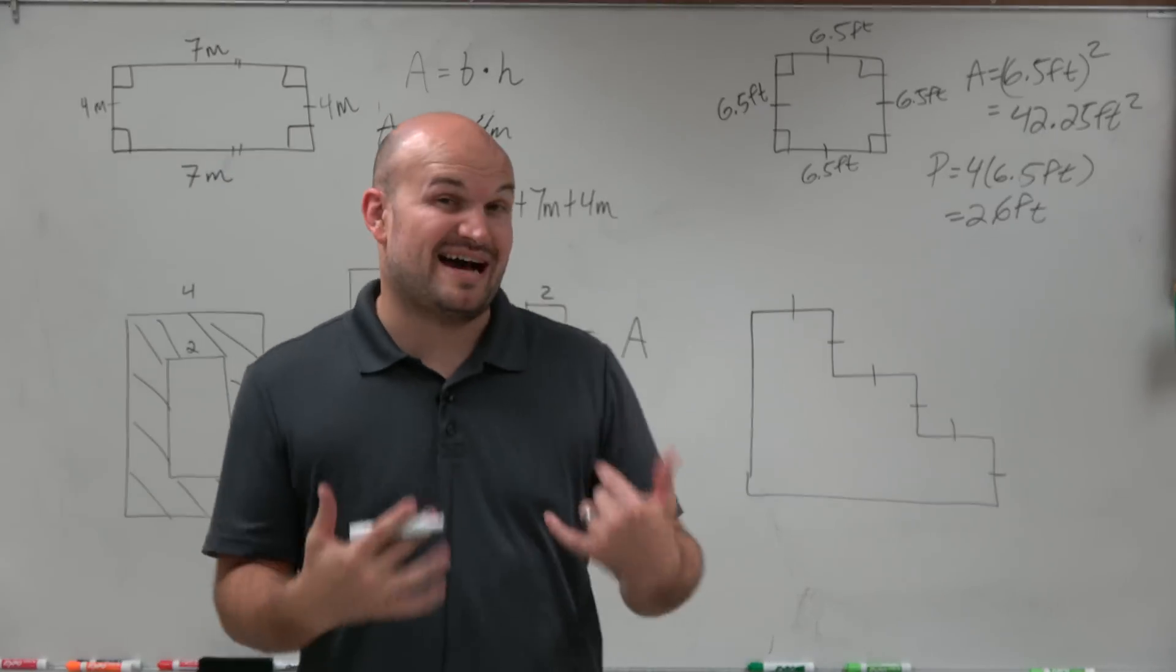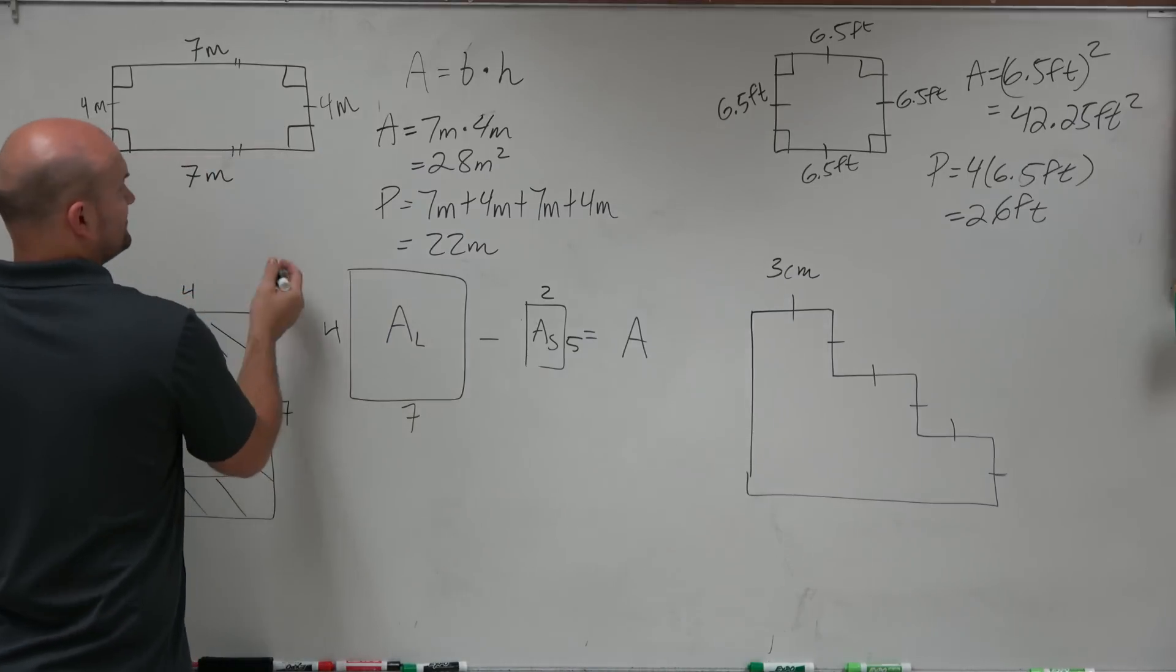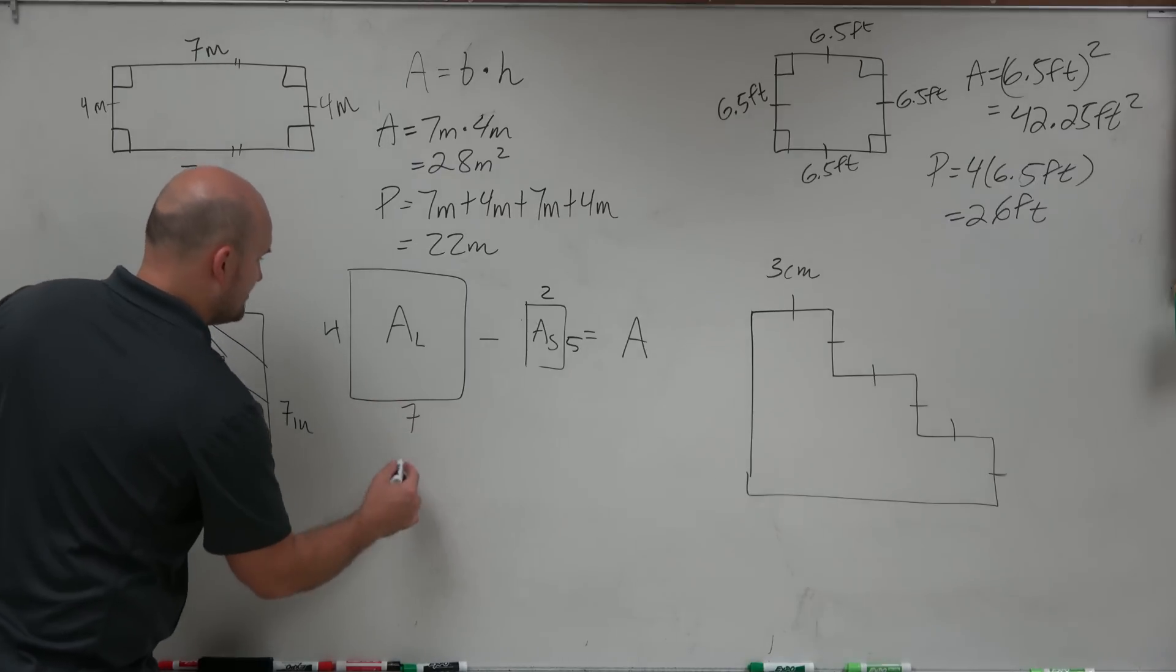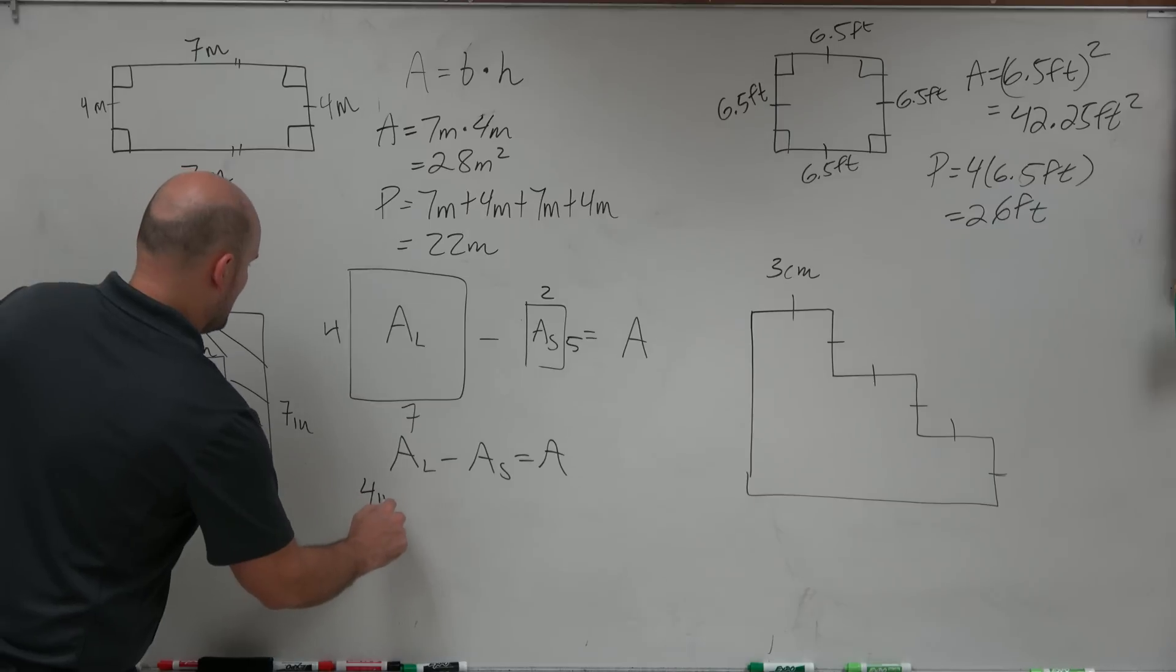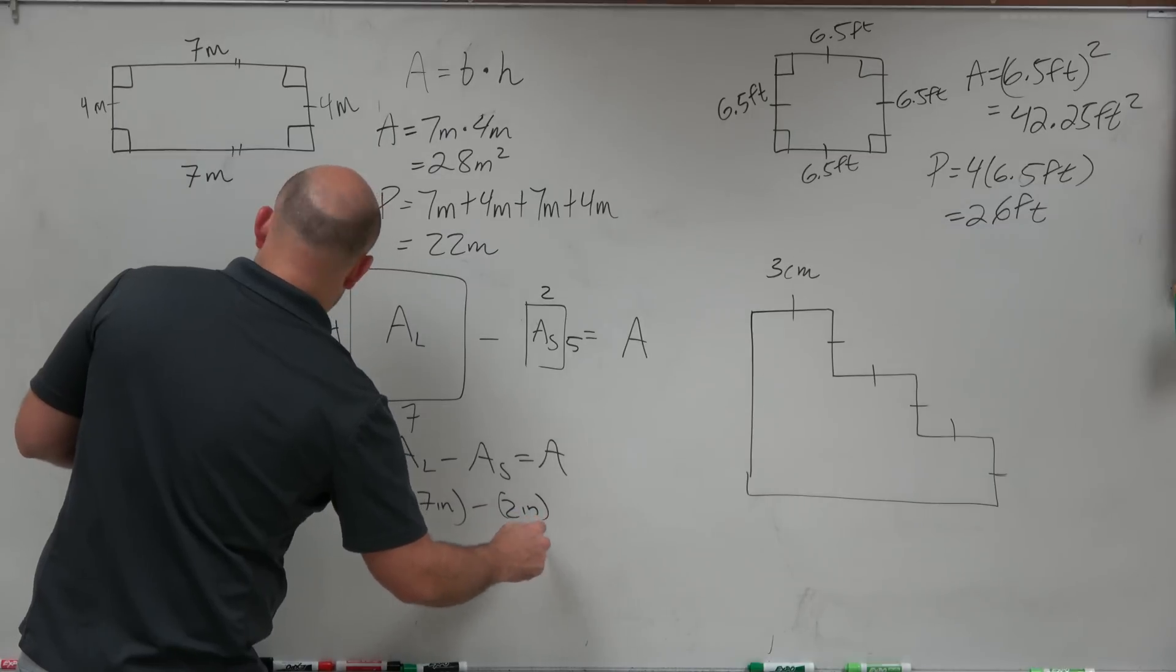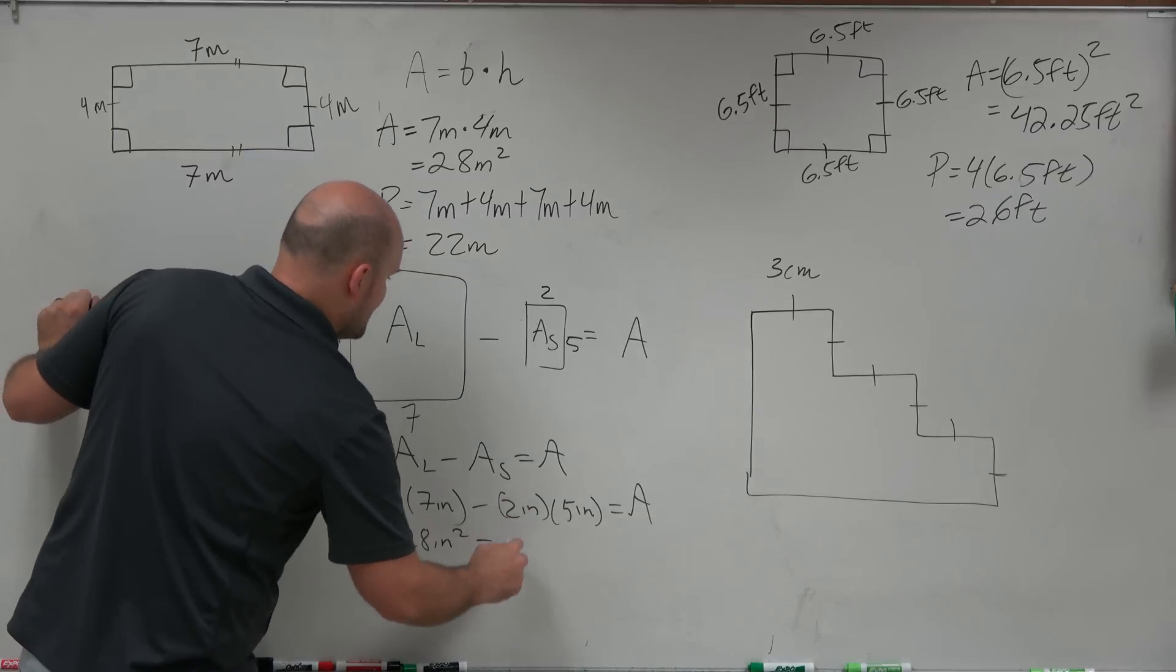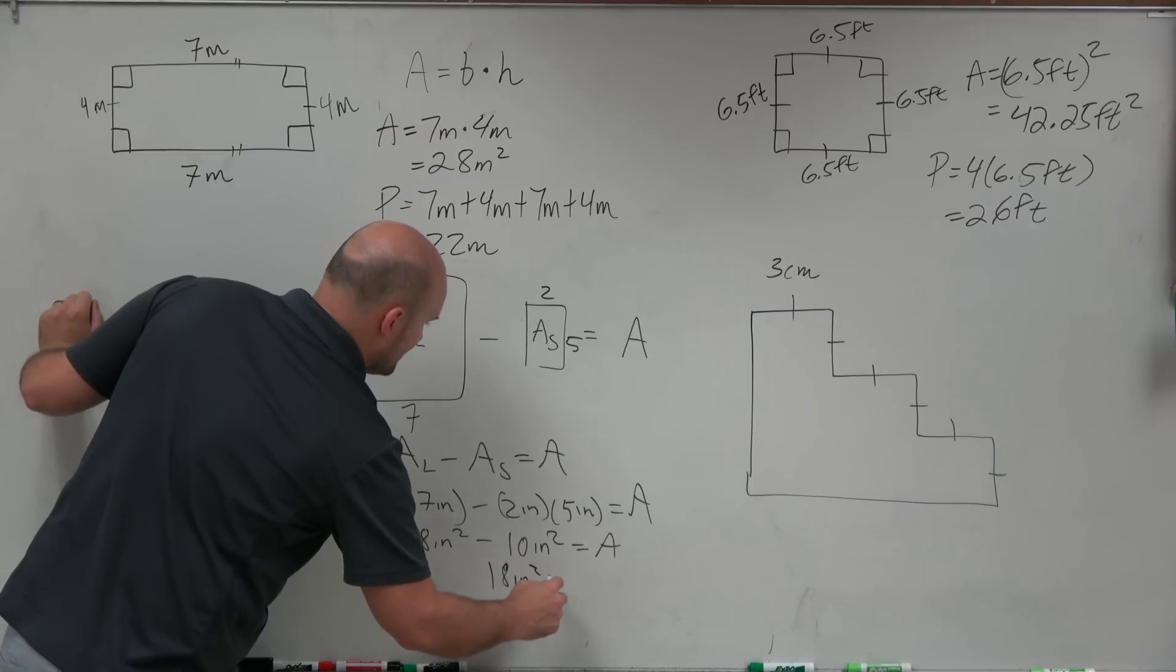All I simply need to do in this example is find the area of each one. The area of the large is going to be 4 inches times 7 inches, minus the area of the small which is going to be 2 inches times 5 inches. That equals the area of my shaded region. So 4 times 7 is 28 inches squared, minus 2 times 5 is 10 inches squared. 28 inches squared minus 10 inches squared is 18 inches squared, which is going to be my area.